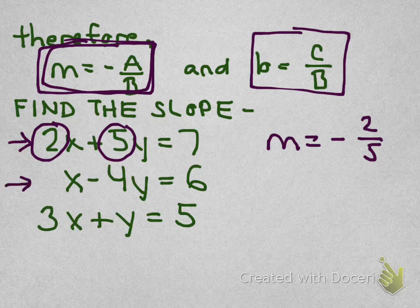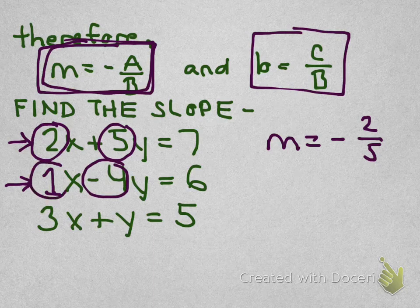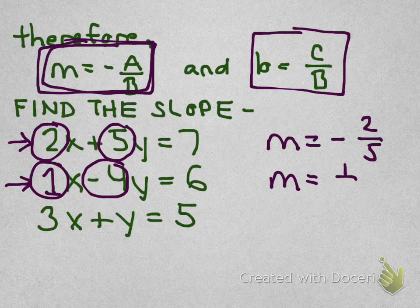In this second one, we have A is 1, positive 1, B is negative 4, so we have 1 over negative 4. We want the opposite of that, so the slope of that second line is 1 fourth.